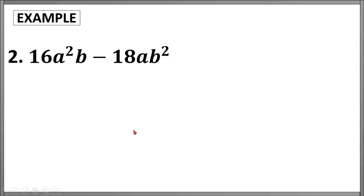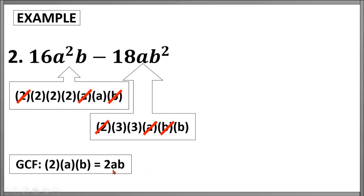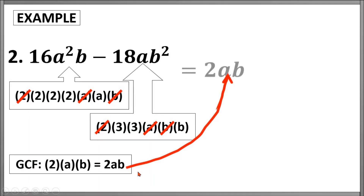Another example: 16a squared b minus 18ab squared. To determine the GCF, let us do the prime factorization. For the first term we have 2 times 2 times 2 times 2 times a times a times b, while for the second term we have 2 times 3 times 3 times a times b times b. Let us identify their common factors — we have 2, a, and b. Multiplying these we will have 2ab as our GCF.